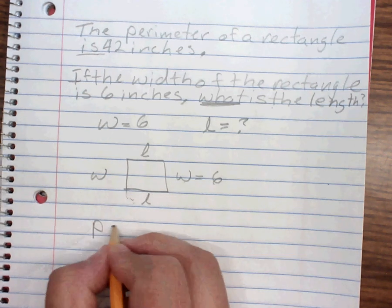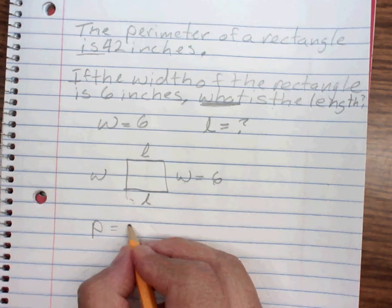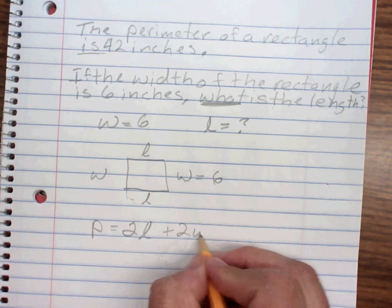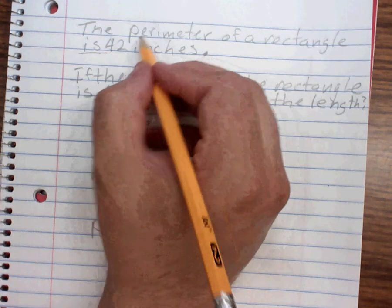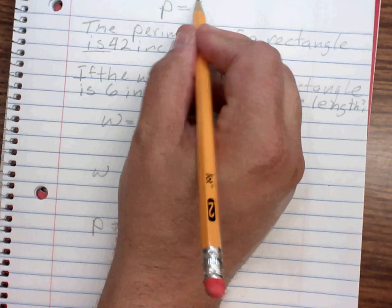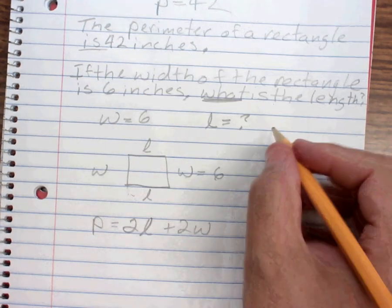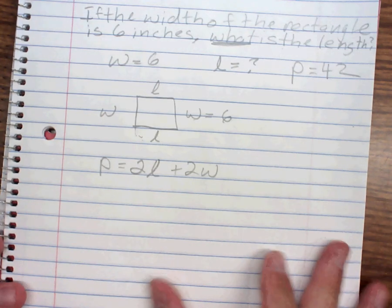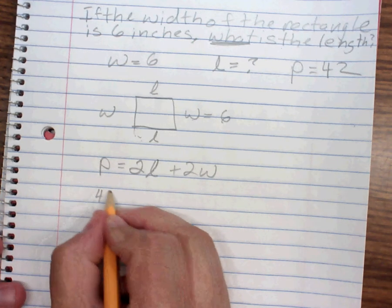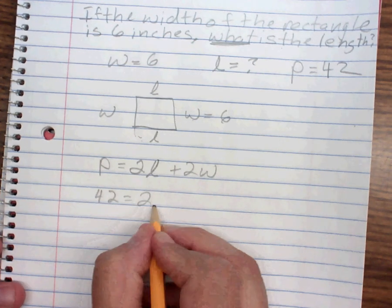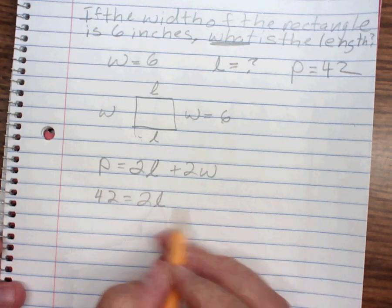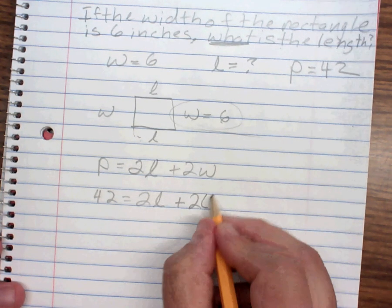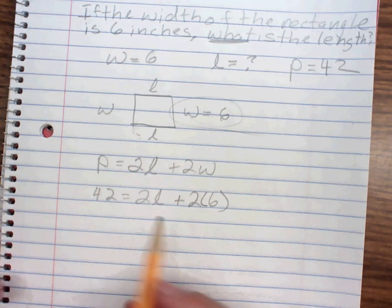And we're told that the perimeter, by the way, how do I find the perimeter? 2 times the length plus 2 times the width. But I'm also told that the perimeter is 42. So P is 42. I'm going to start plugging some numbers in. P is 42. That's equal to 2 times L. I don't know what L is, so I leave it in there. Plus 2 times W, but I know that W is 6. I got a bunch of numbers and one variable L.